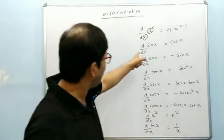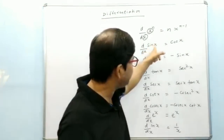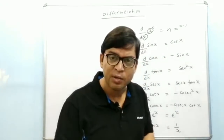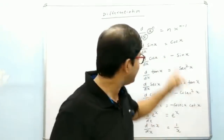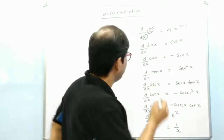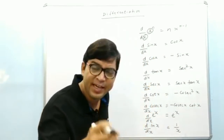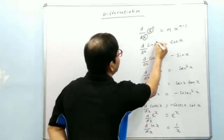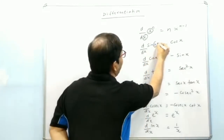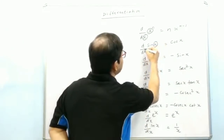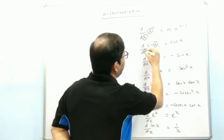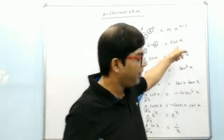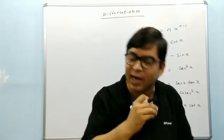Now see this formula: differentiation of sin x with respect to x is cos x. What is the key here? Again the same thing — whatever angle is here, the same thing should be there, then the result will be cos of that thing.